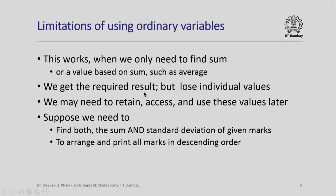This works, but it works only when we need to find sum or any value based on sum such as an average. Having calculated the sum, we know that we divide it by n and we will find the average. So we get the required result but we lose individual values. Now there may be occasions when we need to retain, access, and use these values later. For example, suppose we need to find not just the sum but we need to find the standard deviation of given marks for which we need the average, which means that we will need to access all those elements again. Suppose we need to arrange and print all marks in descending order, we cannot throw away any mark that we have read because after reading the marks somehow we will have to rearrange them in descending order and print them. These are the limitations which we cannot solve using ordinary variables.